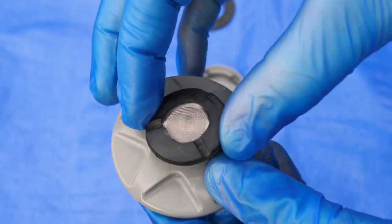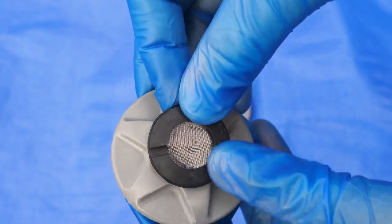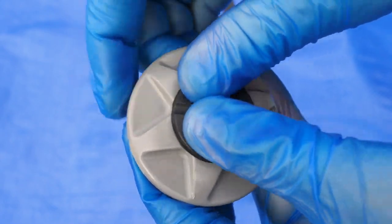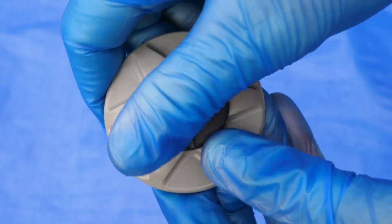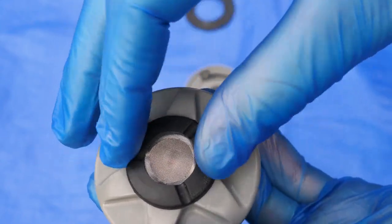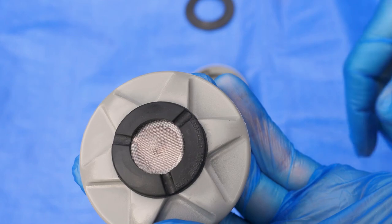So that way you can take the screen, reinstall that screen, it just presses right in there. Make sure you get some 303 on that screen. It'll keep the seal all nice and tight so that no more sediment's getting in there.